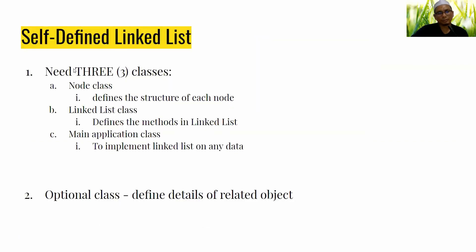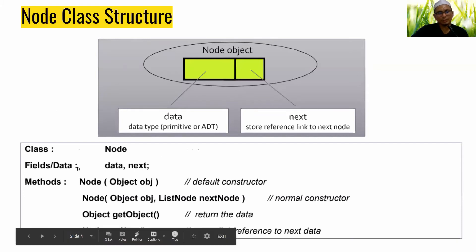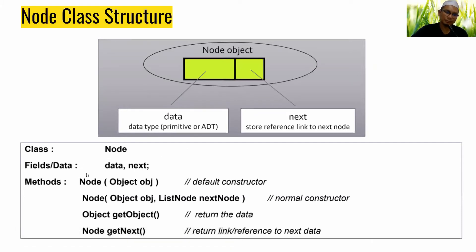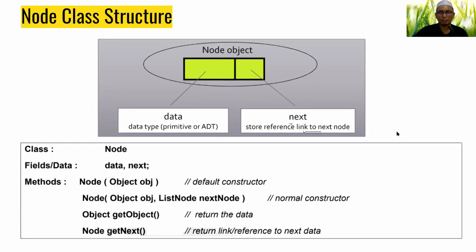Let's go through the first class, which is the Node class. Look at the class diagram — this class consists of two fields or data members: data and next. This class represents the structure of a node, which consists of two parts: first, data, and second, next, which holds the address of the next node.